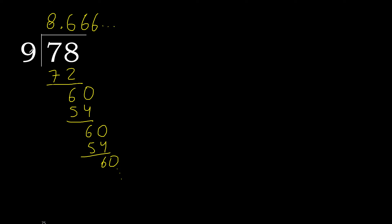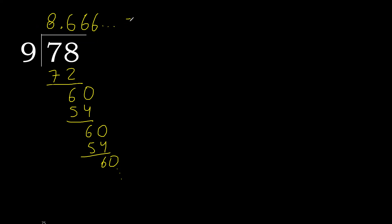78 divided by 9 is here, or after the point, 6 repeating — therefore like this, repeat. Equal — finish it.